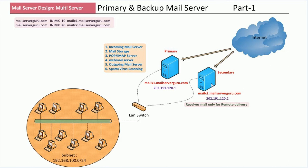To achieve incoming mail failover, we set up another mail server named mailx2.mailserverguru.com. This server's sole purpose is to receive mail in case the primary server goes down. We assign a higher MX priority value to this server. This server doesn't have any user accounts or inboxes, so it cannot deliver mail locally. Instead, it receives mail and stores it in its queue for remote delivery, then waits for the primary server to come back online.